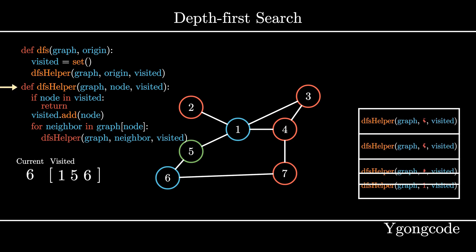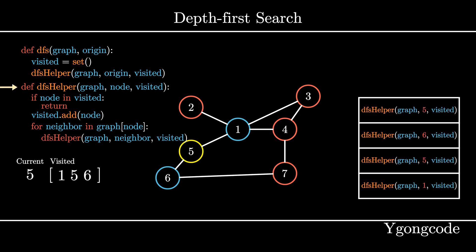At dfsHelper 5, because 5 has been visited, we hit our early return condition. Because this function has finished executing, we can pop it off the call stack.